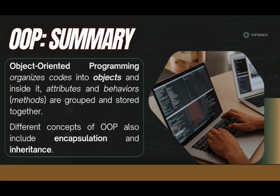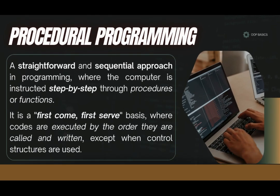We have now learned that object-oriented programming, or OOP, organizes code into objects, and inside it, attributes and behaviors are grouped and stored together. Aside from OOP, we also have what we call procedural programming. It is a straightforward and sequential approach in programming, where the computer is instructed step-by-step through procedures or functions. Basically, it's a first-come-first-serve basis — code is executed in the order it is called and written, except when control structures are used.